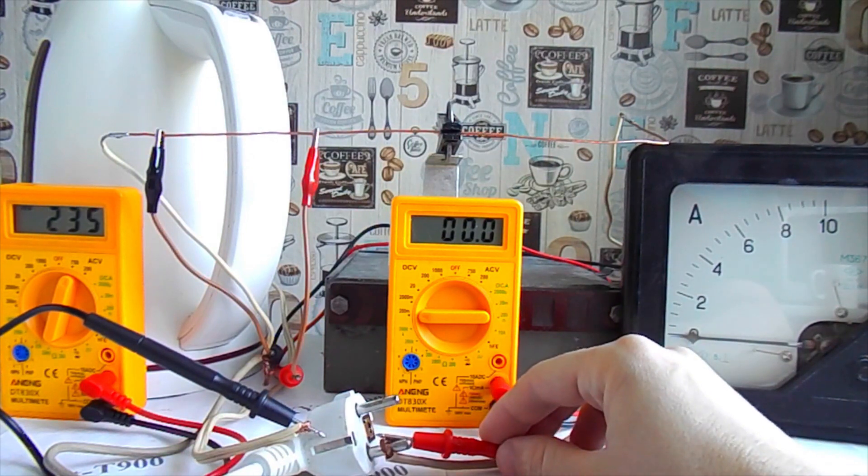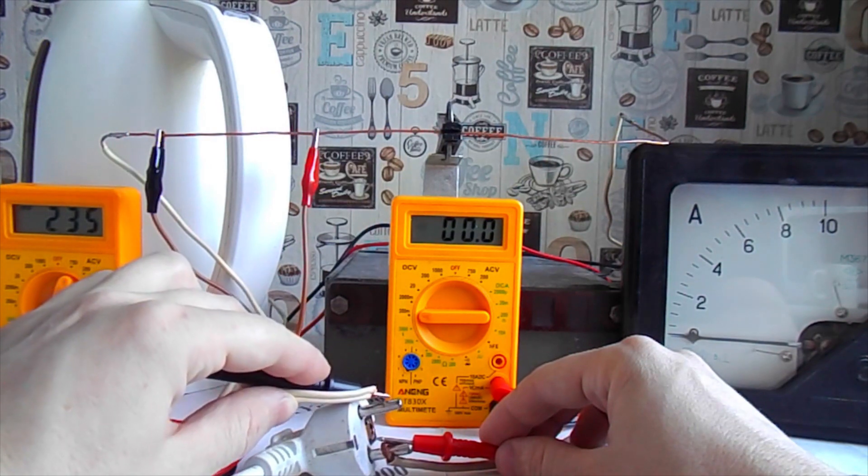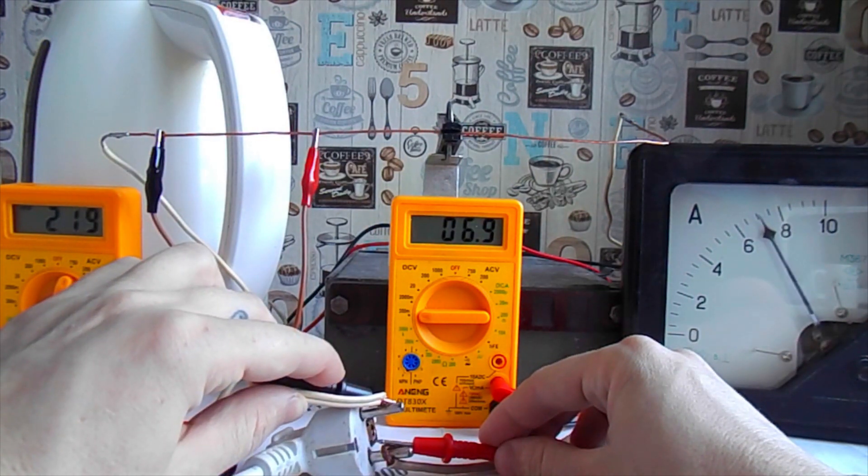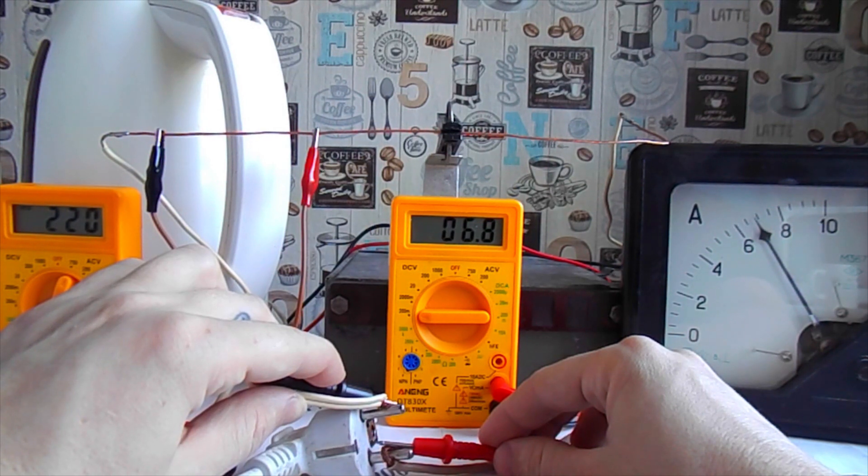On the left, I added another multimeter that shows the voltage. The current consumption of the kettle turned out to be 7 amperes, which surprised me a little. I expected about 10 since the kettle is 2200 watts. Many of you have probably already understood that this conductor acts as a shunt, and the principle of measuring the voltage drop is used in many ammeters.